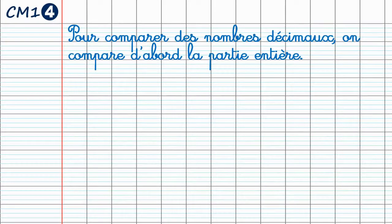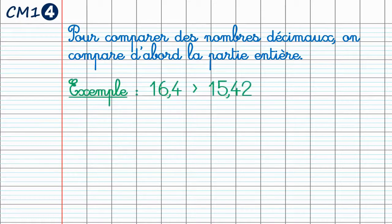Pour comparer des nombres décimaux, on compare d'abord la partie entière. Par exemple, 16,4 et 15,42. On voit que le 16 est plus grand que le 15, c'est-à-dire les parties entières. Je n'ai nul besoin d'aller voir la partie décimale. Je sais donc que 16,4 est plus grand que 15,42.